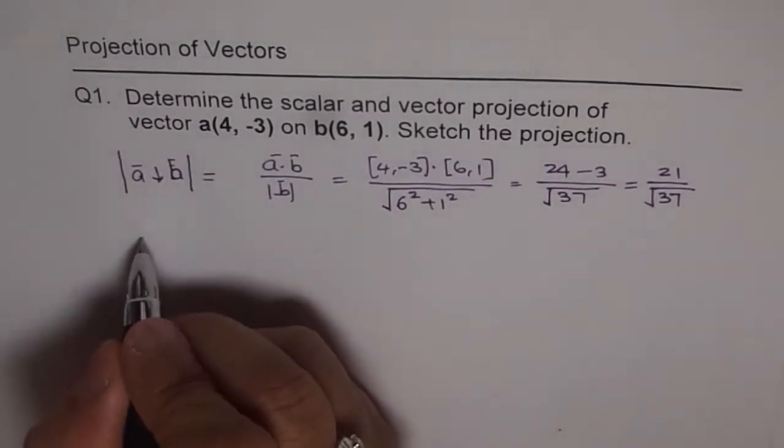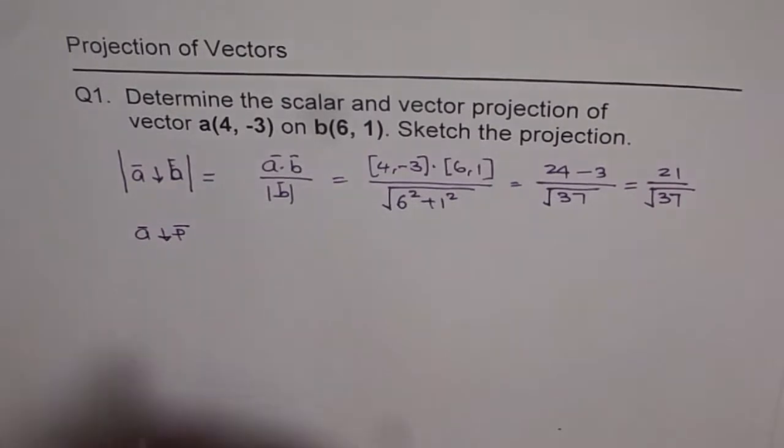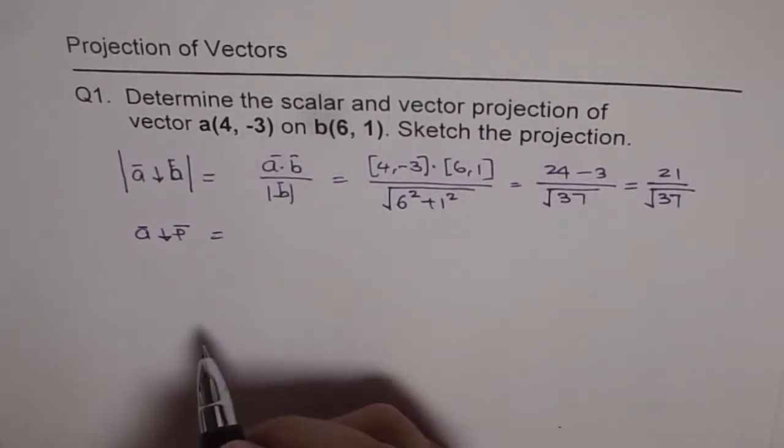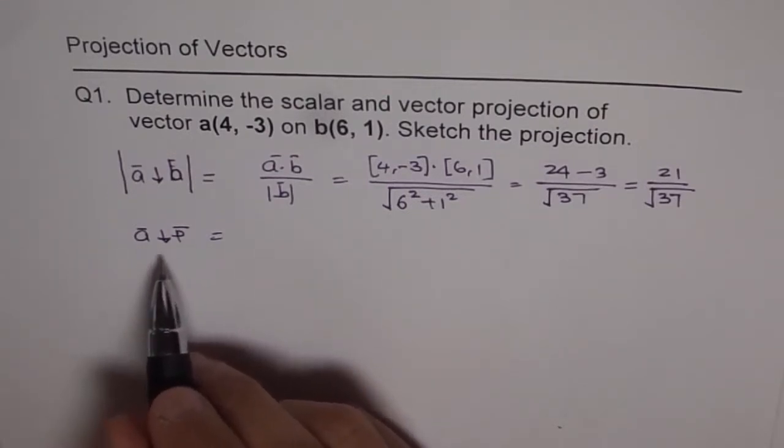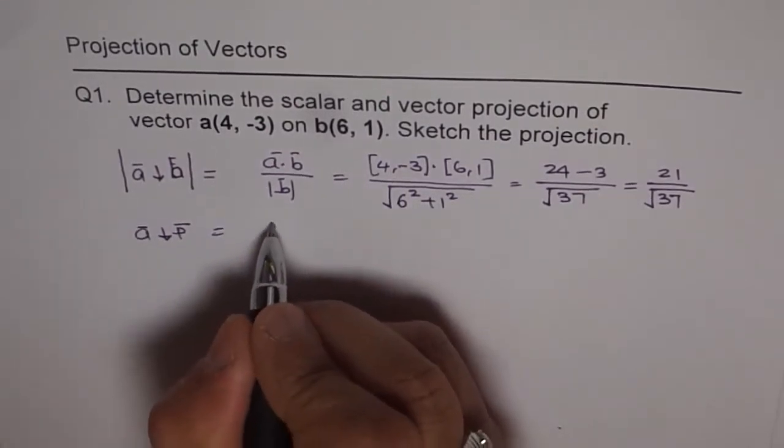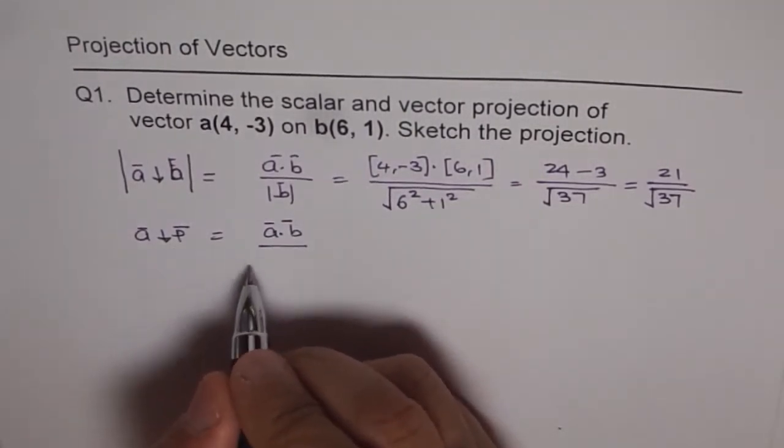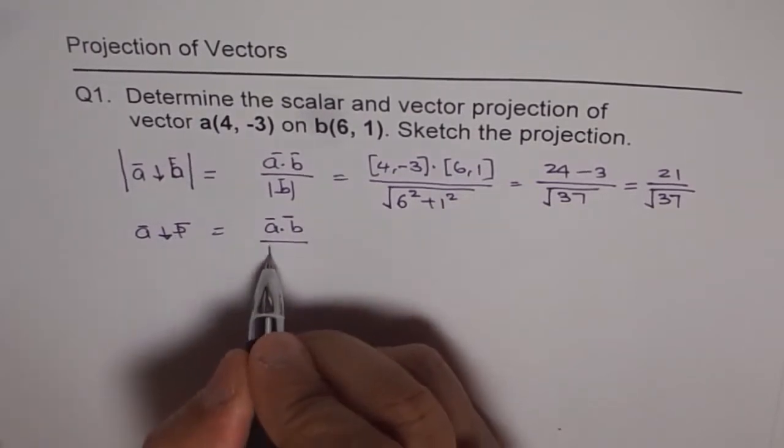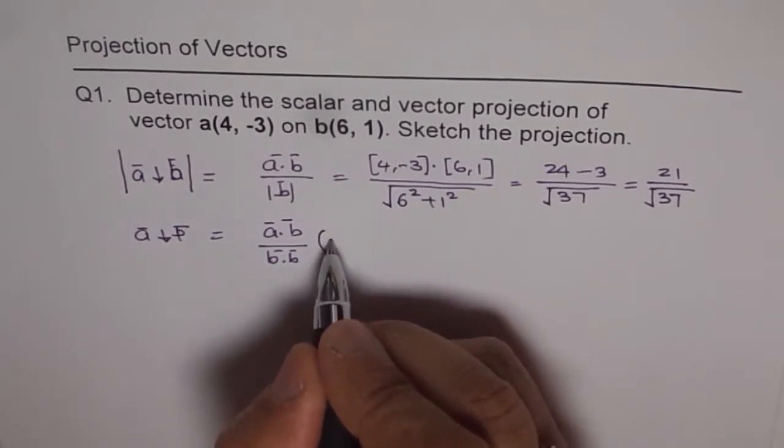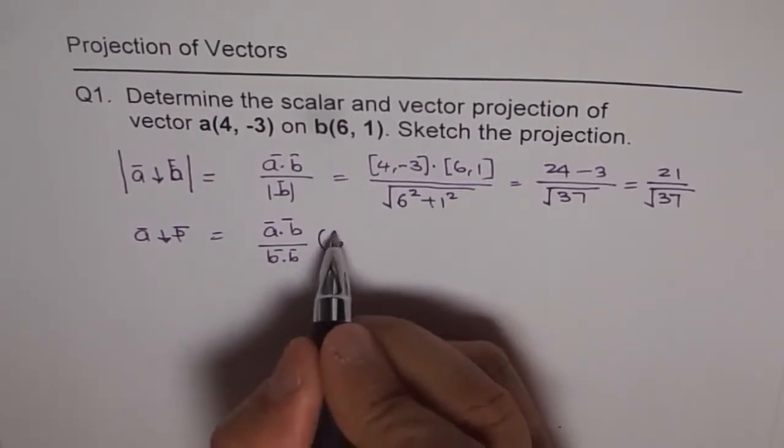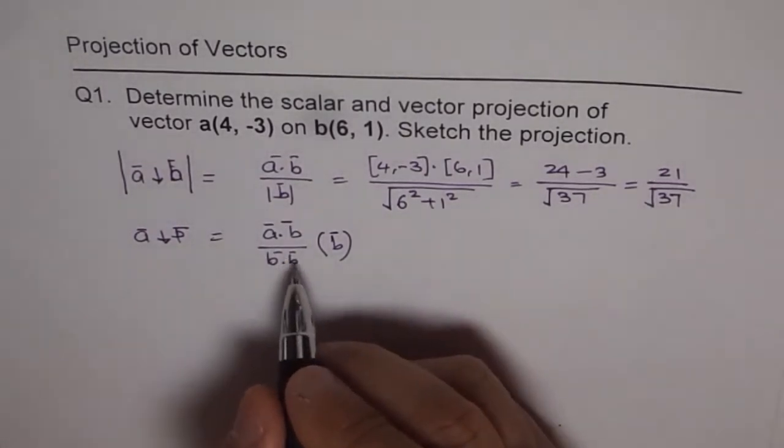Now, the vector projection of A on B. That is the symbol for vector projection. I'm not writing scalar and vector projection here, I'm just straight away writing the notation. Now that is A dot B, dot product of A and B divided by the dot product of B times the B vector in the direction of B. So that is what is vector projection.